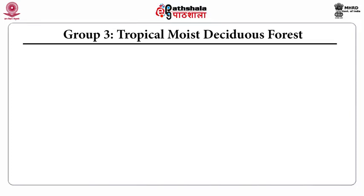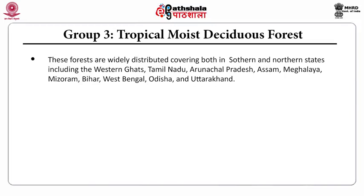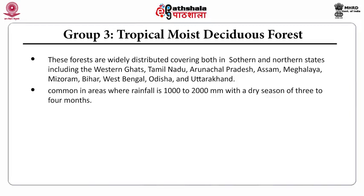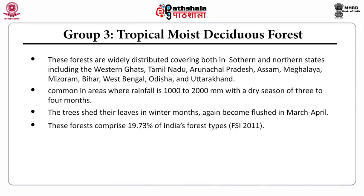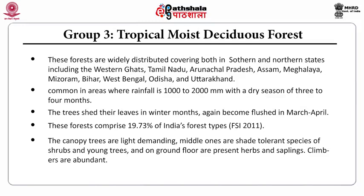Group 3 is represented by the tropical moist deciduous forests. These forests are widely distributed covering both southern and northern states, including the Western Ghats, Tamil Nadu, Arunachal Pradesh, Assam, Meghalaya, Mizoram, Bihar, West Bengal, Odisha, and Uttarakhand. Common in areas where rainfall is 1,000 to 2,000 mm with a dry season of 3 to 4 months. The trees shed their leaves in winter months and again become flushed during March and April. These forests comprise 19.73% of India's forest types according to the FSI report 2011.